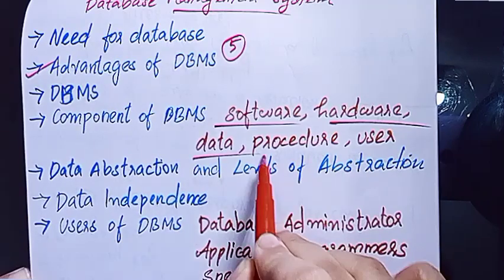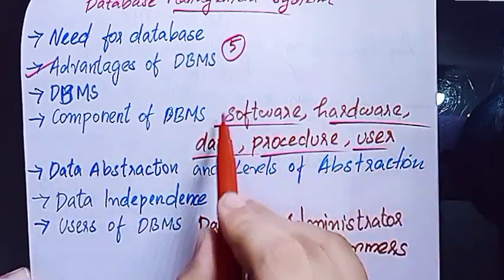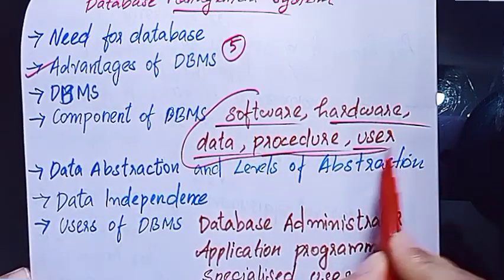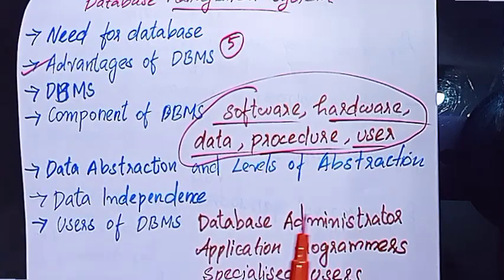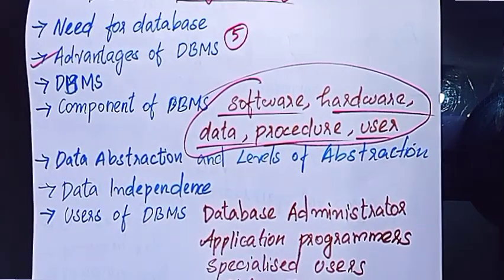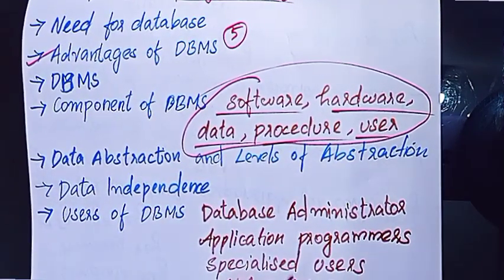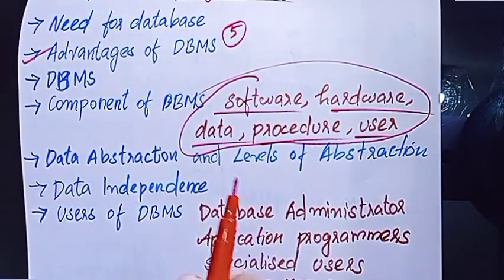The components of a database include: software, hardware, and data from the user. This is the explanation. Then, data abstraction and levels of abstraction — we will learn 3 levels.